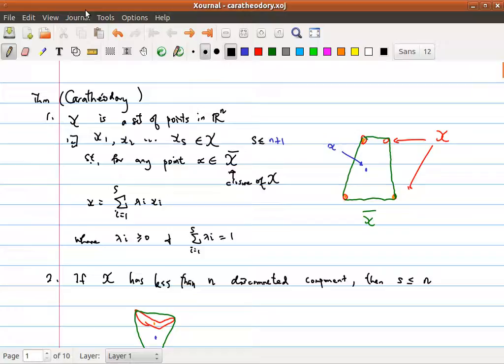I'd like to talk about the Carathéodory Theorem today. It's a useful theorem in information theory in many scenarios where we want to specify the rate region for some problem. In that case, we need to introduce some auxiliary random variable, and we want to restrict the alphabet size of those variables. In that case, Carathéodory Theorem will be very useful.